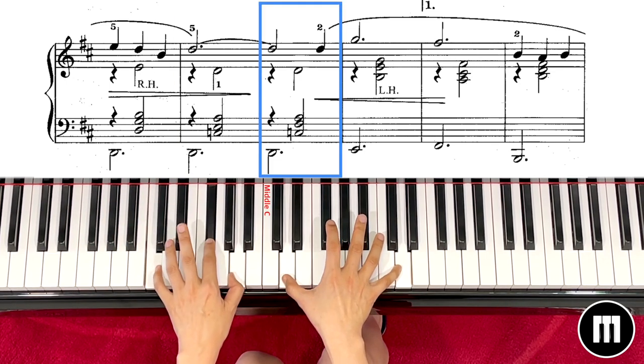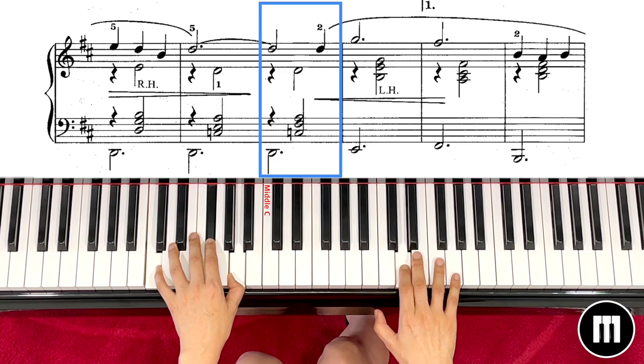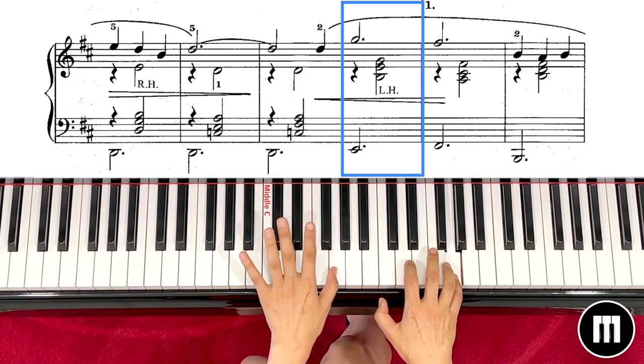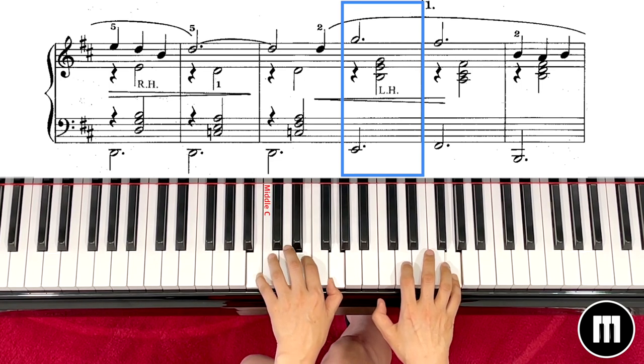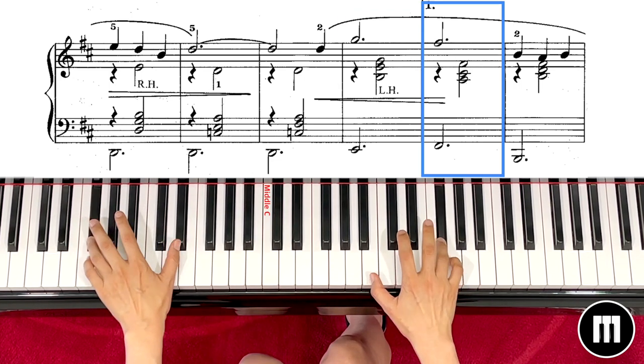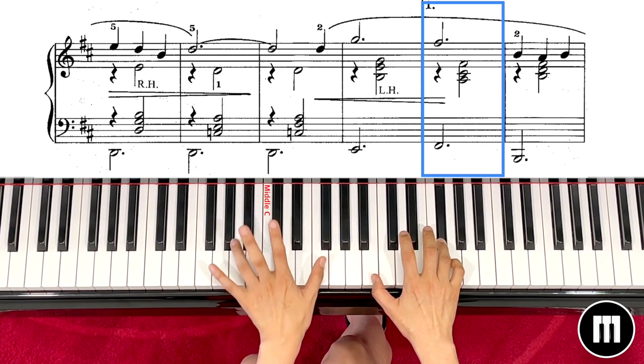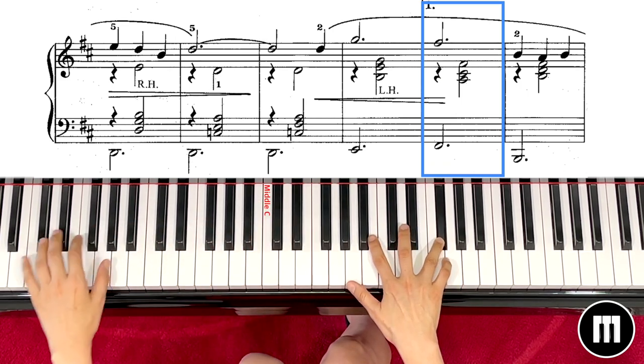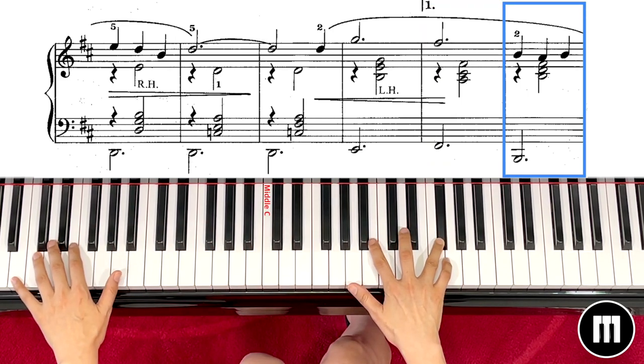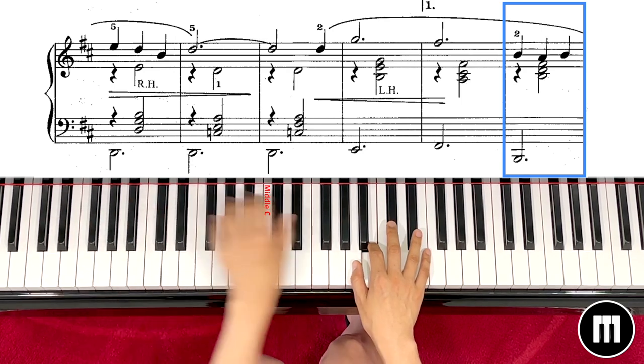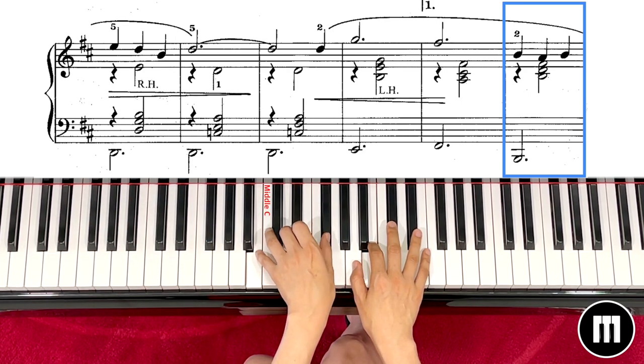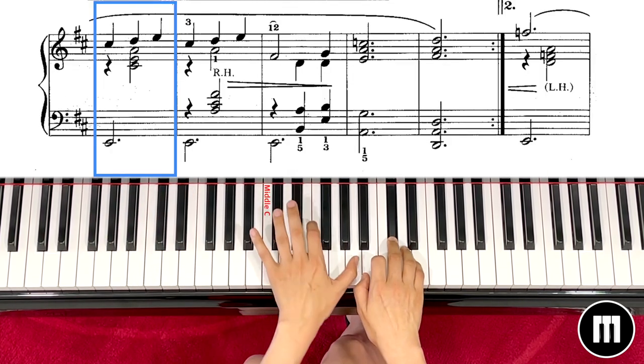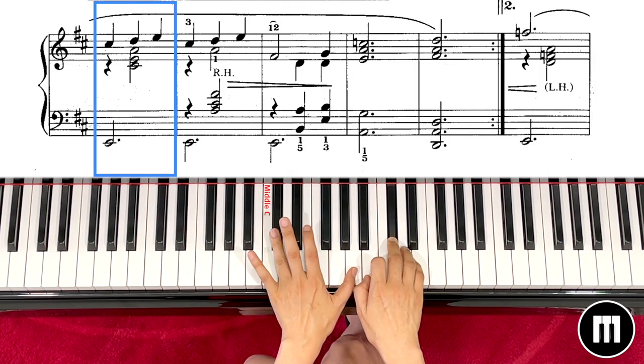And then left hand E, right hand G, and then left hand play B E G two and F sharp both. And left hand A C sharp F sharp two, and right hand B, left hand C sharp E A.